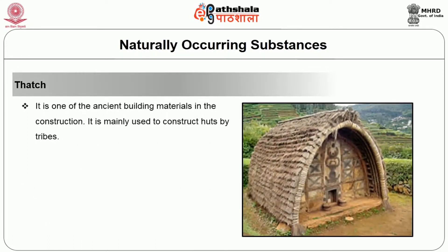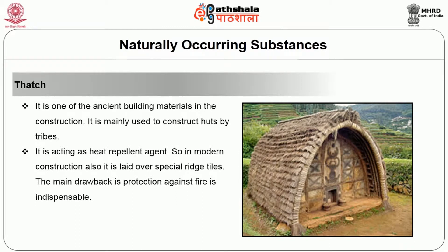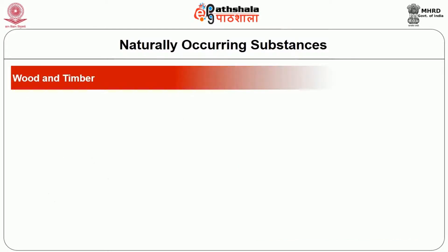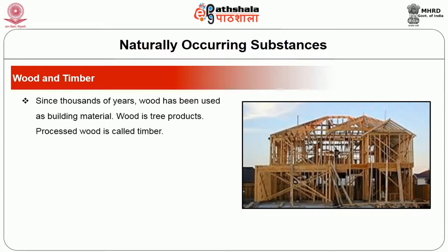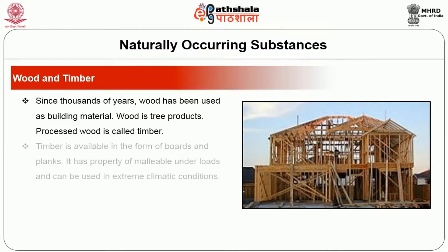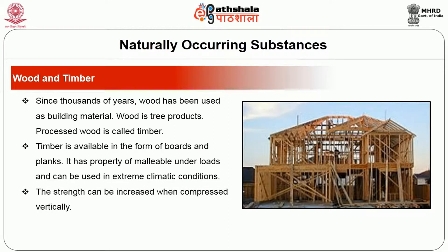Next is thatch. It is one of the ancient building materials in construction, mainly used to construct huts by tribes. It acts as a heat repellent agent, and in modern construction it is laid over special rich tights. The main drawback is that protection against fire is indispensable. Next is wood and timber. Since thousands of years, wood has been used as a building material. Wood is a tree product; processed wood is called timber. Timber is available in the form of boards and planks. It has the property of being malleable under loads and can be used in extreme climatic conditions, and its strength can be increased when compressed vertically.